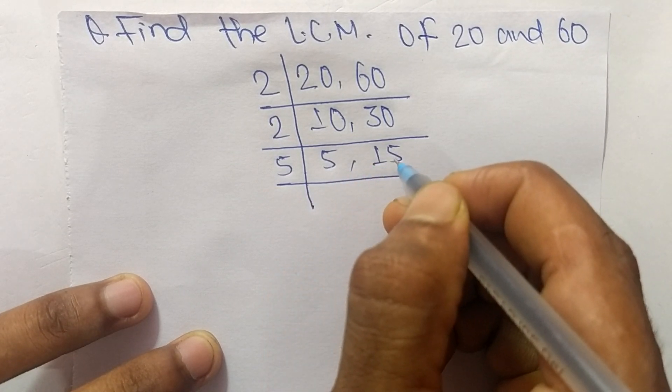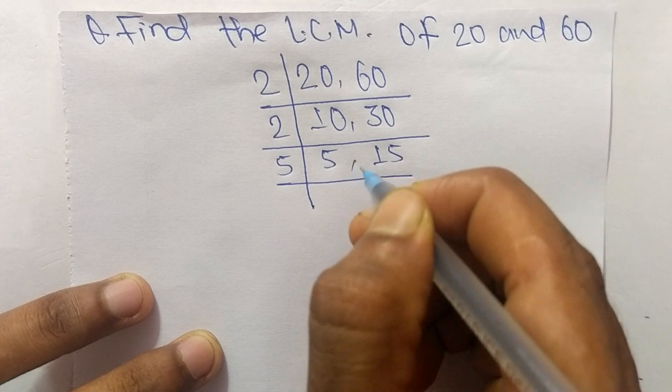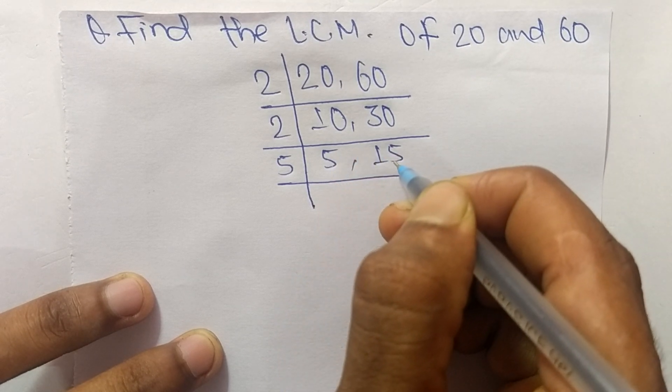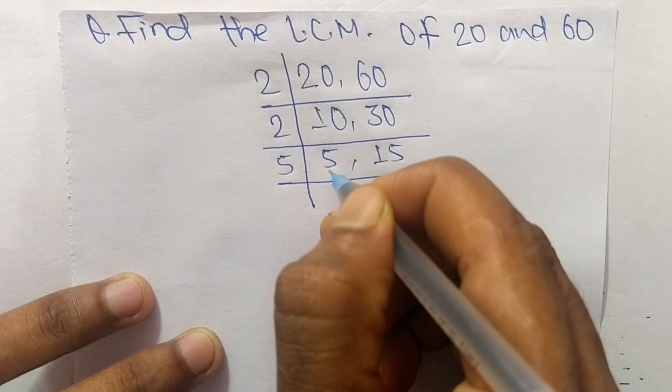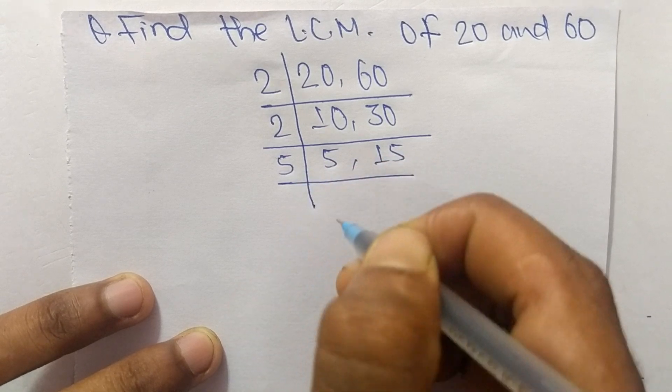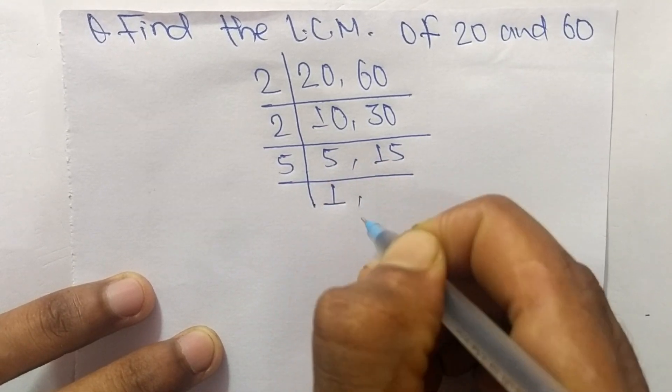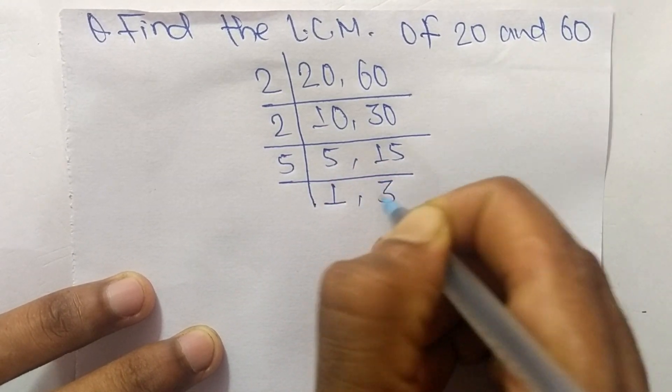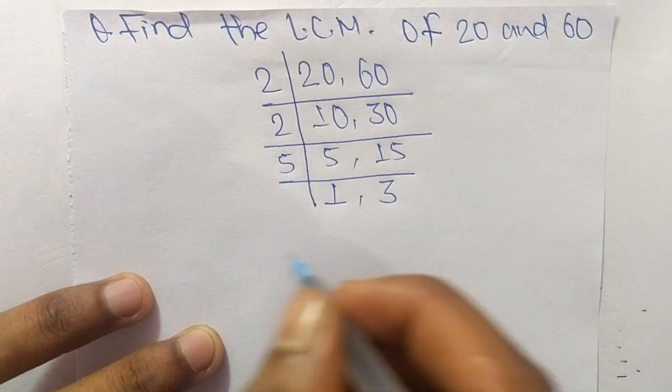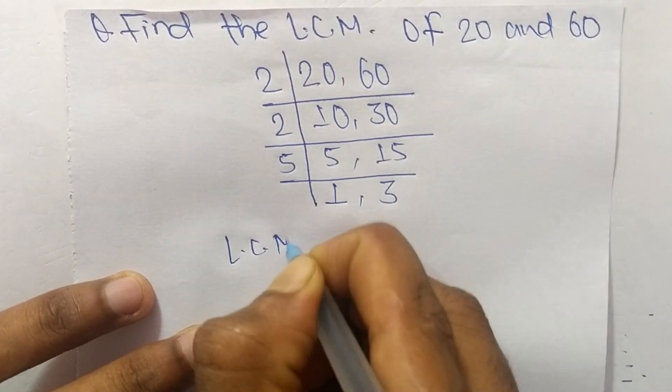When we take 3, then 3 can exactly divide 15 but can't divide 5, so we take 5. 5 times 1 equals 5, and 5 times 3 equals 15. So the LCM is equal to...